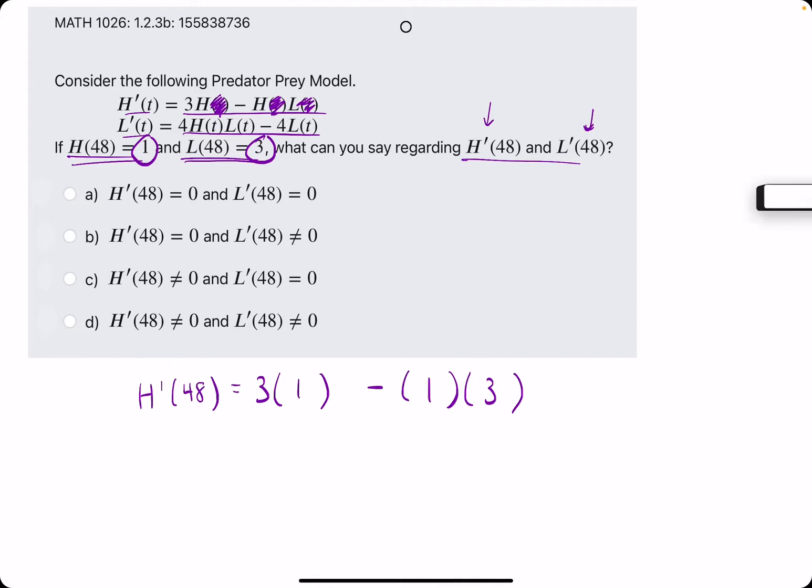Alright, so let's go ahead and plug in the values into L' of 48. That'll be 4 times H, which is 1, times L, which is 3, minus 4 times L, which again is 3. So again, to simplify the L' it would be like 4 times H times L, minus 4 times L.